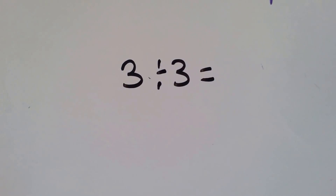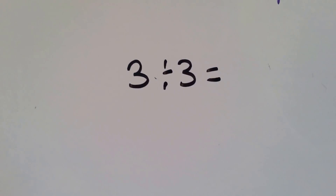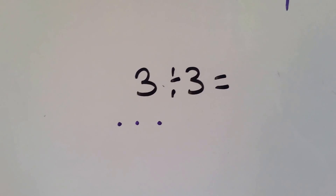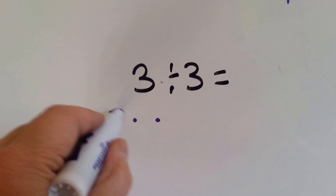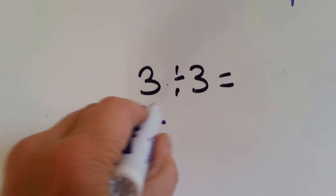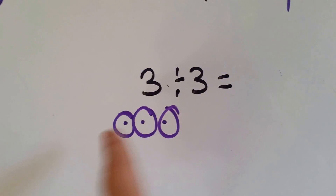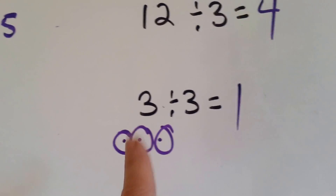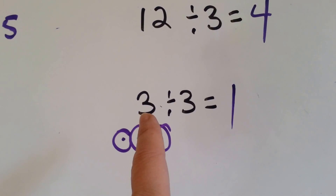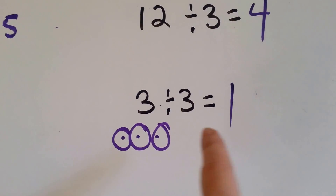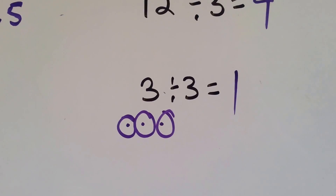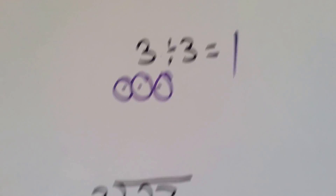3 divided by 3. If you had 3 dots and you put them into 3 groups, how many dots are in each group? 1. Any time you divide a number by itself, it equals 1. Remember, that's the identity property.